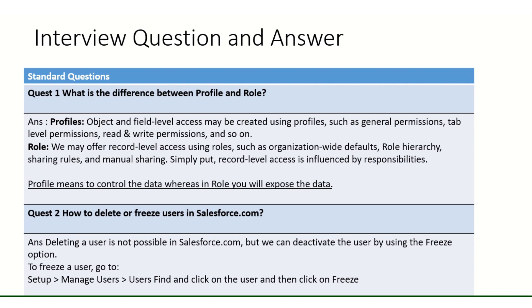Record-level access uses OWD (Organization-Wide Defaults), role hierarchy, sharing rules, and manual sharing. Simply put, the basic difference is: a profile controls data — controlling by many things, what type of control you want to give. You assign that profile to the user. Whereas with a role, you expose the data — you give access to data up the hierarchy. Interviewers confuse candidates a lot on this, so be very careful before giving the answer.